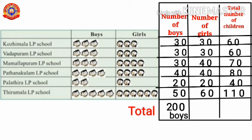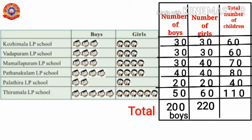Then let's find out the total number of girls. In the 1's place, all 0's add together, we get 0. Then 3+3=6, 6+4=10, 10+4=14, 14+2=16, 16+6=22. So 220 — the total number of girls equals 220.